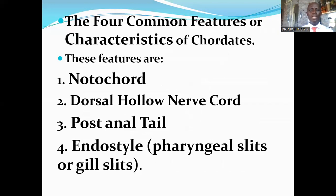The Phylum Chordata has organisms that share four common features. These features are: one, notochord; two, a dorsal hollow nerve cord; three, post-anal tail; and four, an endostyle or the pharyngeal slits or gill slits. These are the four major cardinal features of the chordates.